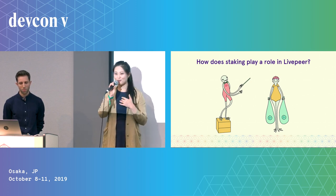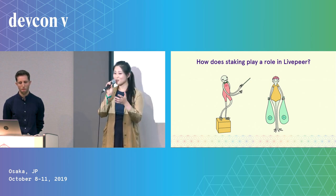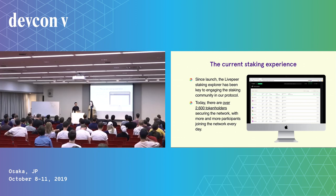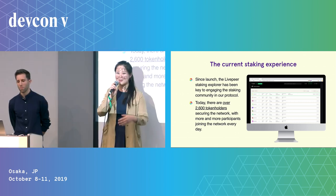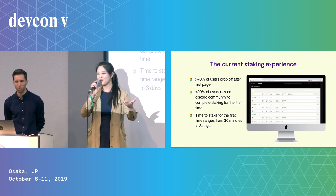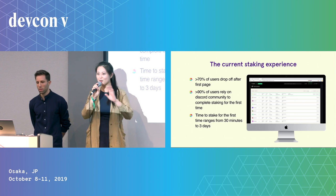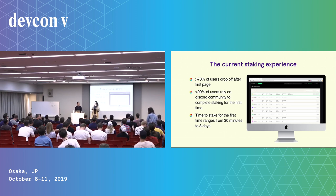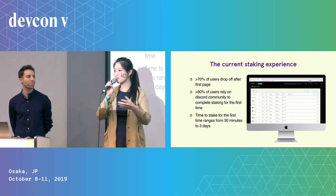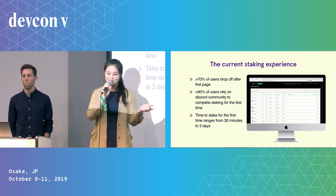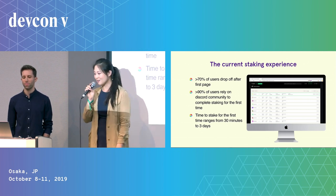Livepeer uses a delegated proof-of-stake system, so when you stake Livepeer token, you ensure the quality of the service and secure the network. Our previous Explorer is where you stake token and manage your rewards. There are over 2,600 token holders currently participating and more every day. But there are still a lot of problems — we're not exempt from the ecosystem's issues. More than 70% of users don't make it past the first page, and more than 90% of staking users had to rely on community and human input just to complete their first staking experience. The first stake can take anywhere from 30 minutes to upwards of three days.